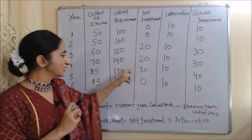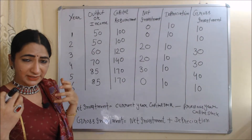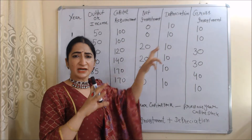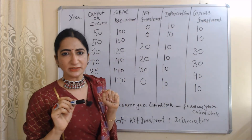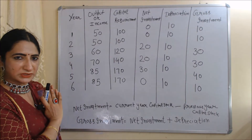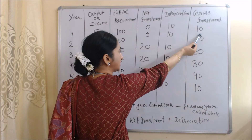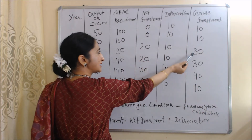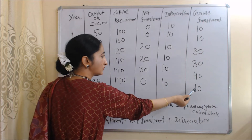Net investment tells us the change in capital stock, calculated by subtracting the previous year's capital stock from the current year's. The next column is depreciation, which we assume is constant at 10 each year. The last column is gross investment, calculated as net investment plus depreciation. So: year 1: 0 + 10 = 10; year 2: 0 + 10 = 10; year 3: 20 + 10 = 30; year 4: 20 + 10 = 30; year 5: 30 + 10 = 40; year 6: 0 + 10 = 10.